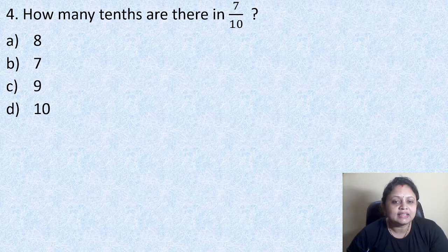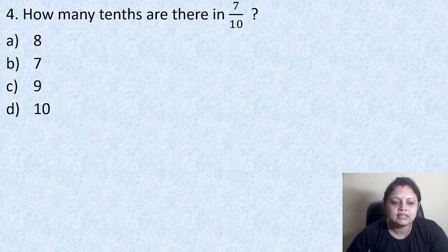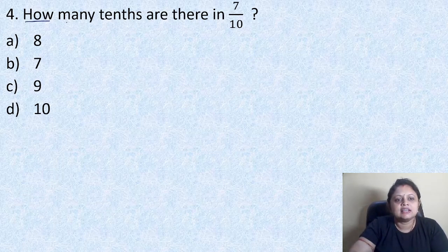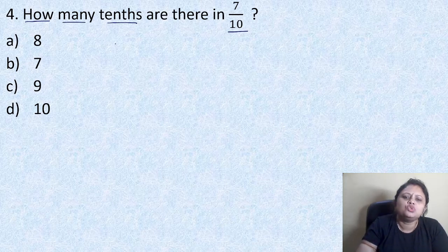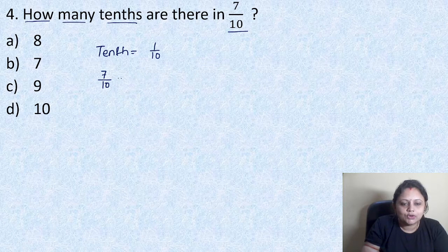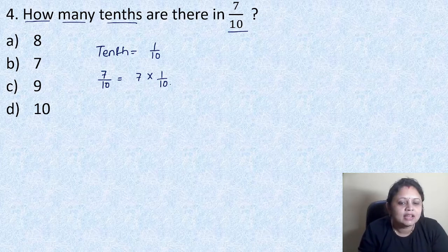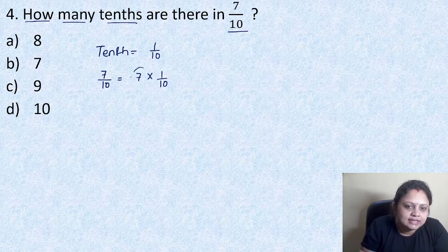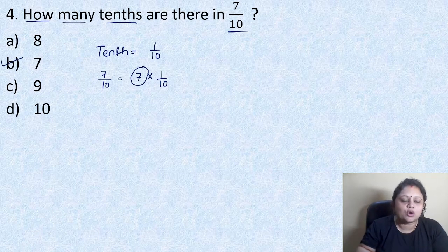Coming to the next question: how many tenths are there in 7 by 10? Option A: 8, B: 7, C: 9, D: 10. In the question it is asked how many tenths are there in 7 by 10. A tenth means 1 by 10. And 7 by 10 we can write as 7 into 1 by 10. So how many 1 by 10 are there? That is 7. So the correct answer is option B, that is 7.